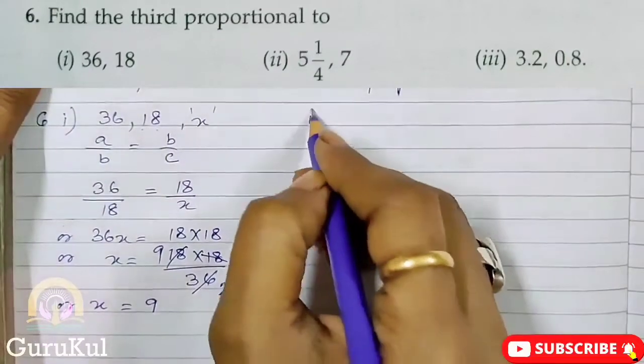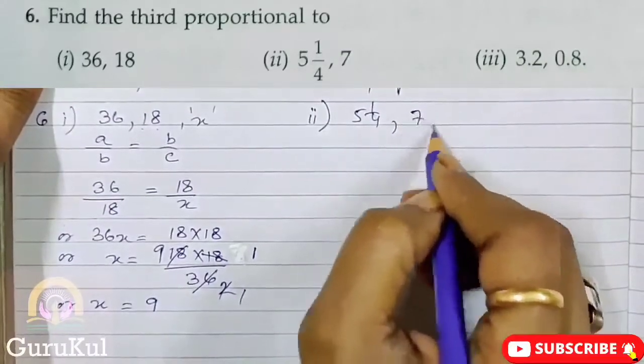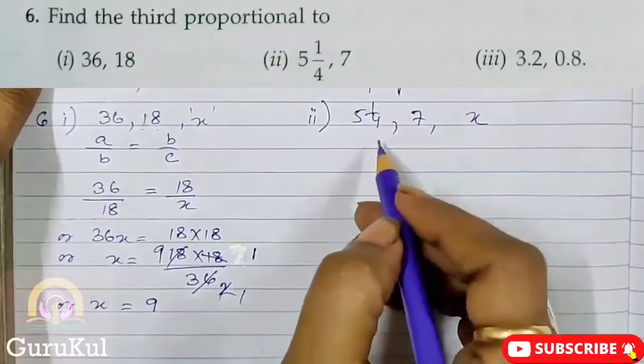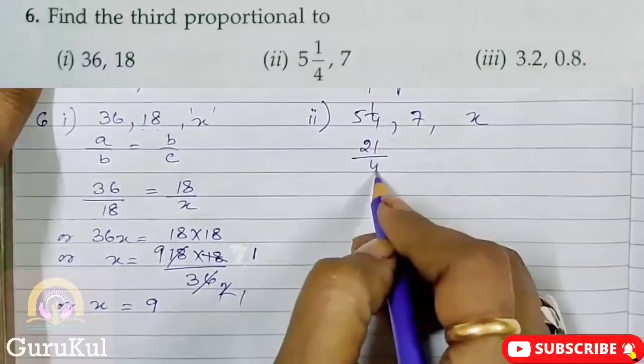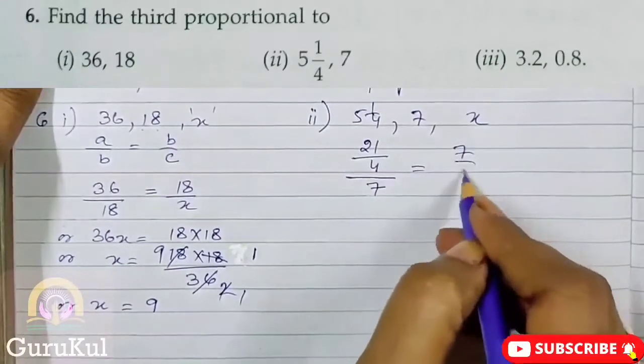Second one. It is 5 and 1/4, 7. So let the third proportion be X. So 4 times 5 is 20. 21 by 4 by 7 is equal to 7 by X.